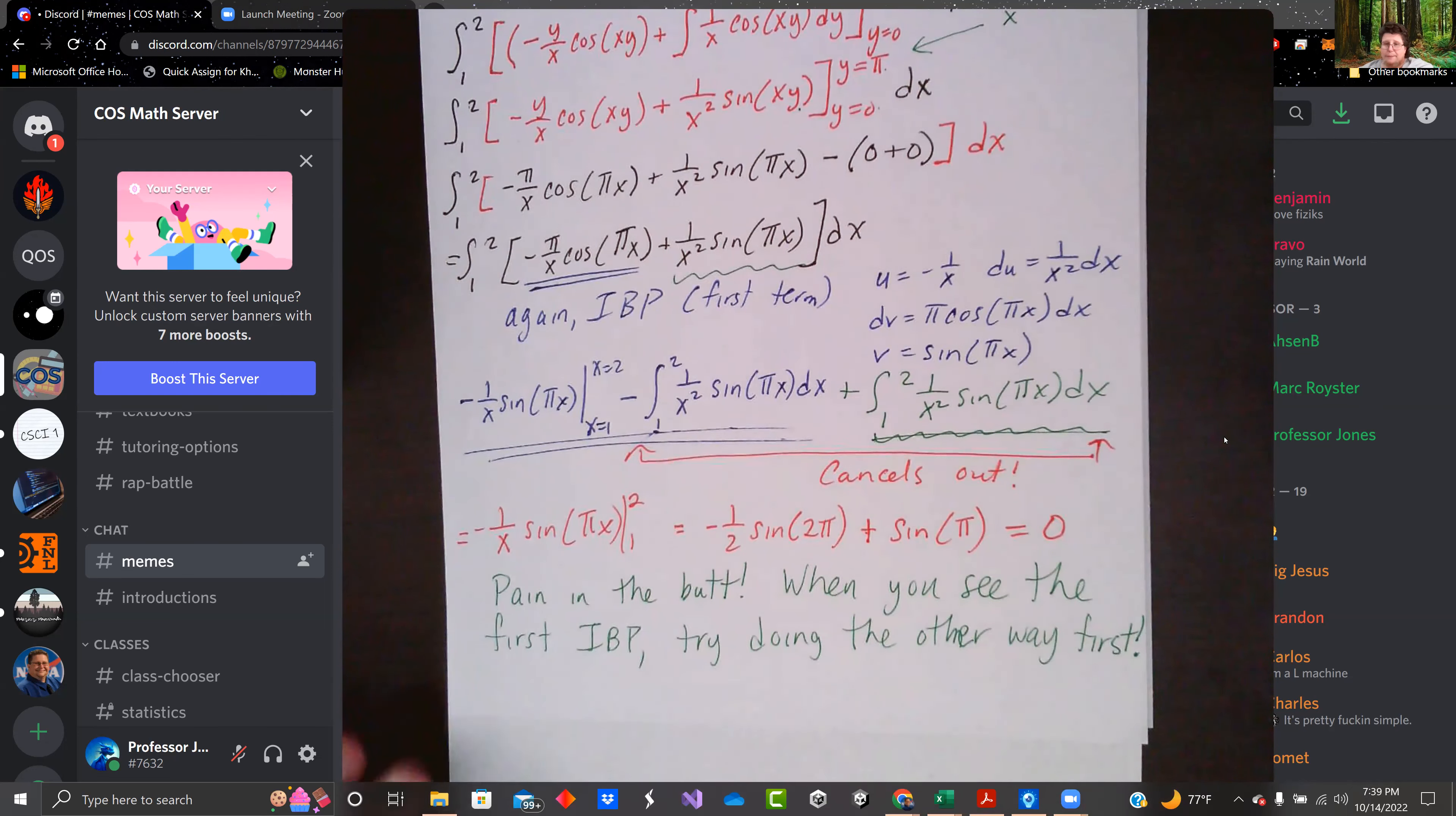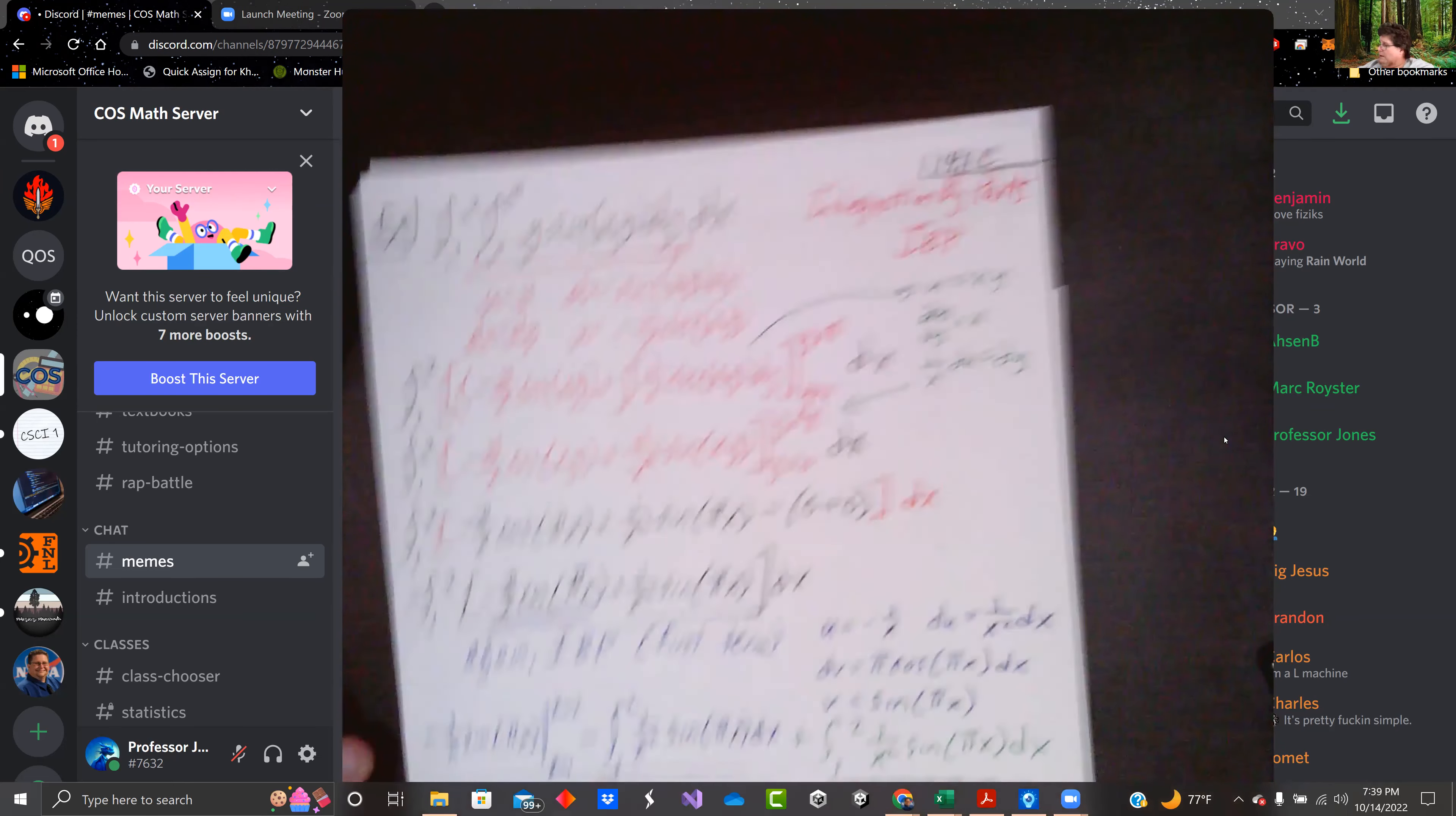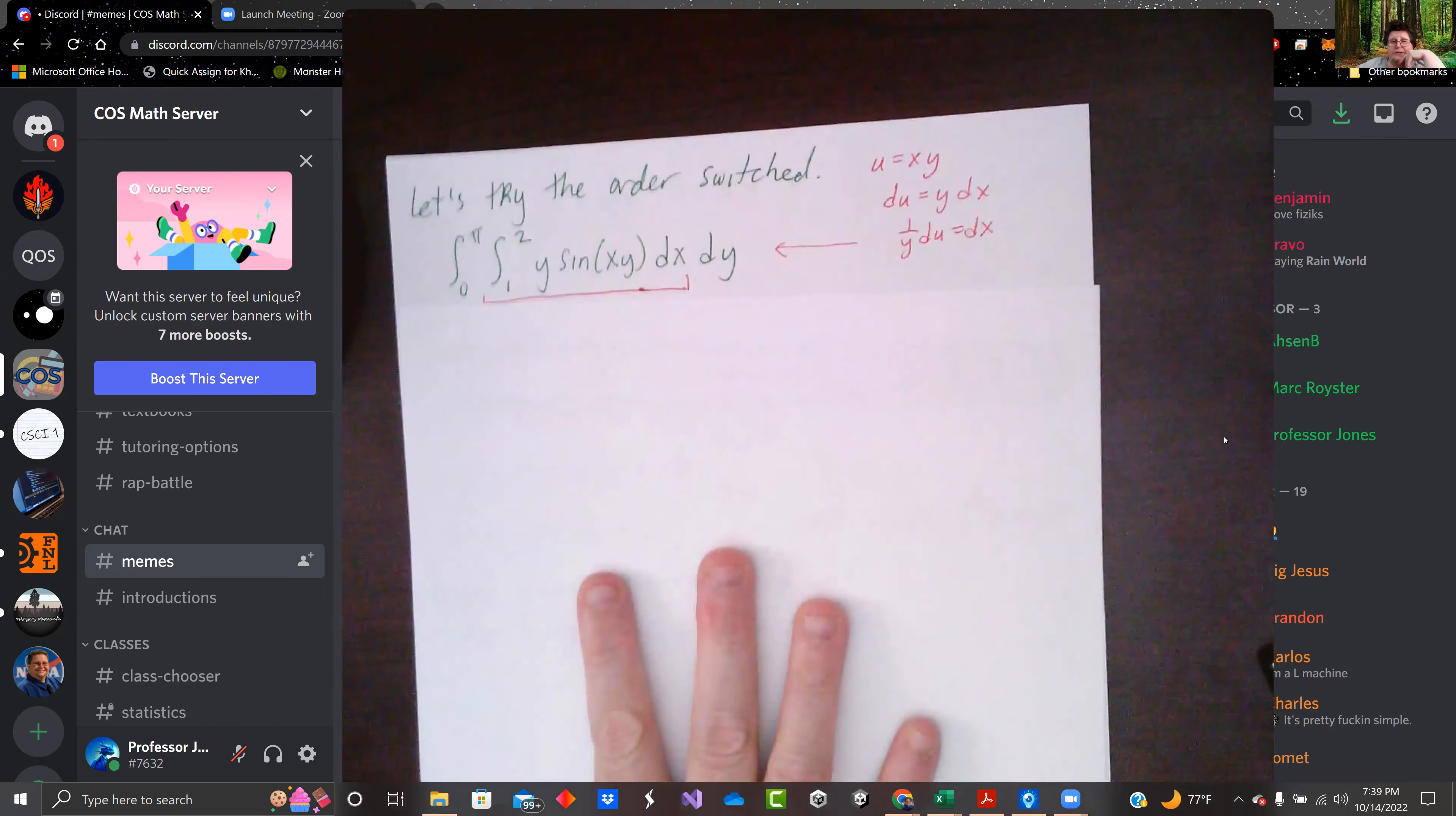So when you see the first integration by parts, maybe you should try changing the order first. So what happens if we change the order first? So I'm going from zero to pi and then one to two. We're going to do dx first.